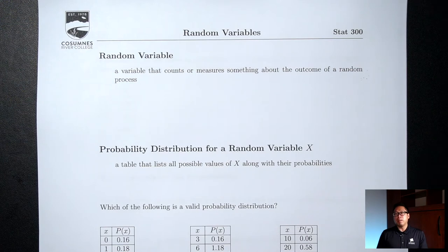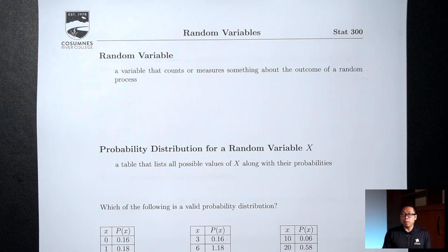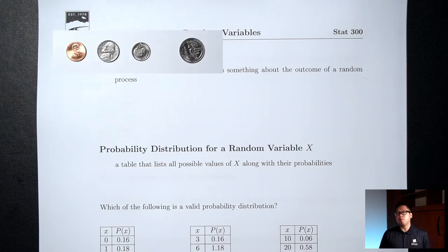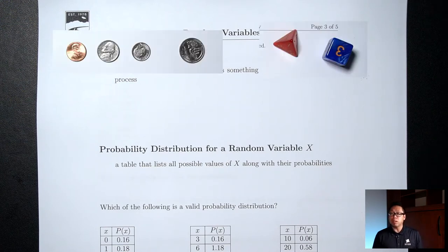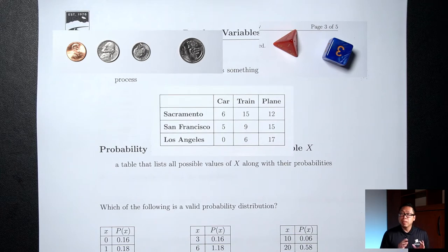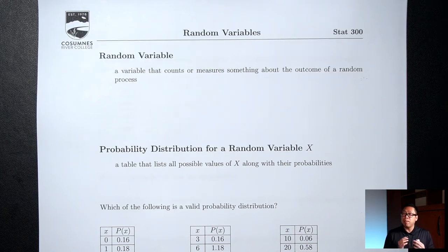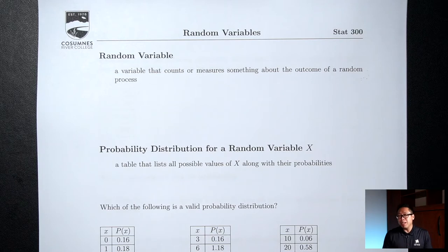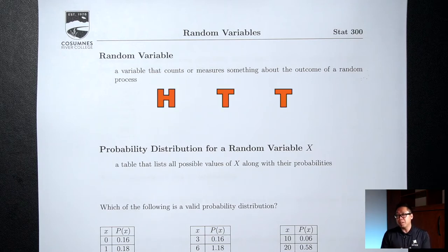We've talked about several different random processes — flipping coins, rolling dice, picking random people. Sometimes you end up with numbers, sometimes you don't. For example, if I flip three coins, you don't end up with numbers. You end up with things like heads, tails, tails — not a number.